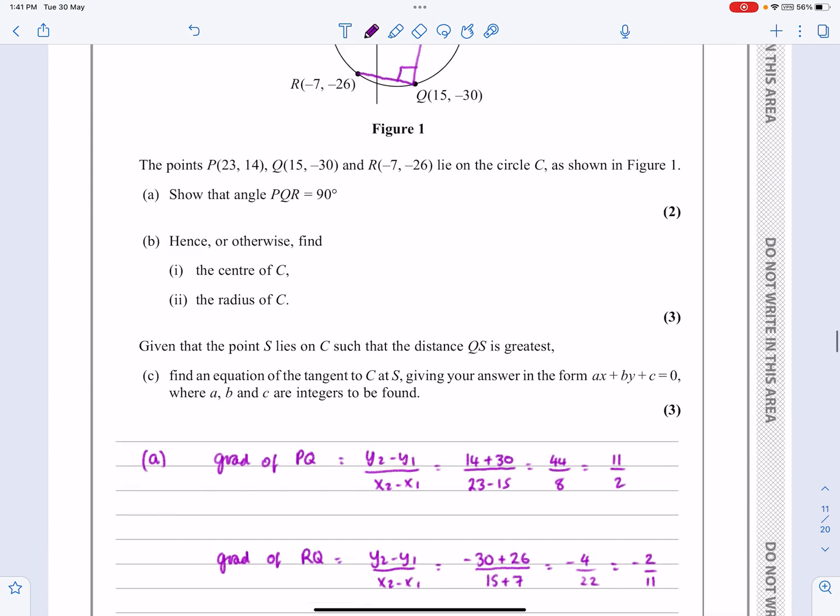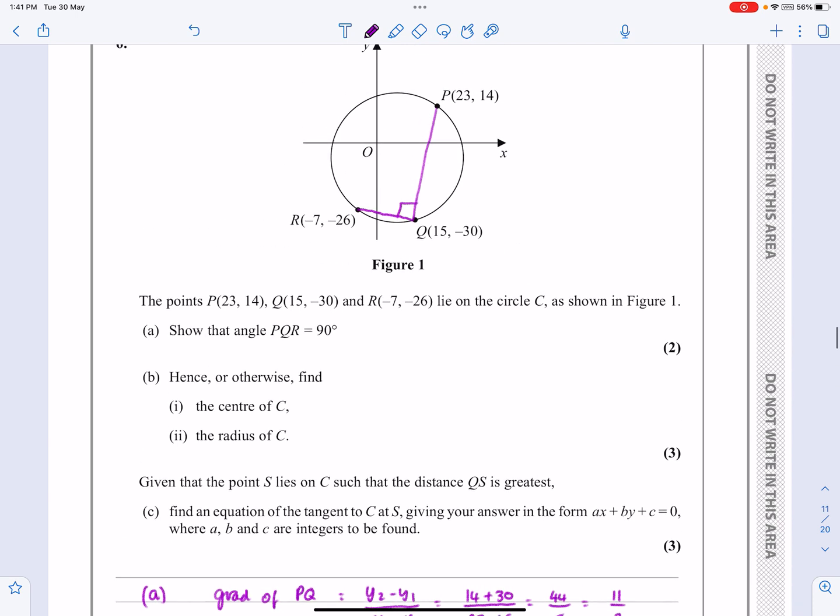What does part B say? Part B says, hence or otherwise, find the centre of the circle. Right, so I've got to make one statement first of all. If that's 90 degrees, then when I draw this line in, I've now got an angle in a semicircle. I've got our IGCSE stuff. This has to be the diameter of my circle. And if that's the diameter of my circle, the centre is going to be the midpoint of that one. So it's going to be the midpoint of PR.